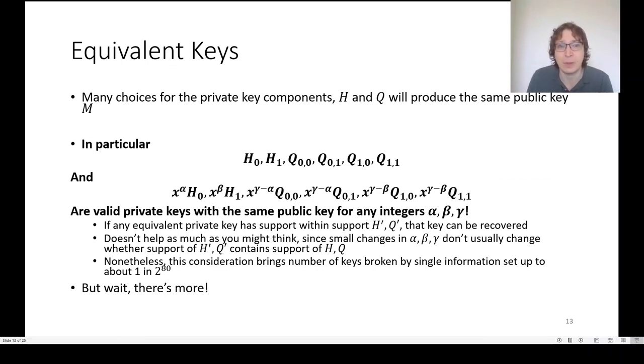In fact, there are a large number of possible private keys that will produce the same public key and recovering any of these private keys will be sufficient to attack the scheme. We can parametrize these with numbers alpha, beta, and gamma. Changing alpha, beta, and gamma by a little bit is usually going to just get you a key that you would have gotten anyway, or that you wouldn't have gotten if you didn't get it with this similar value of alpha, beta, gamma. But there's still enough freedom in there to increase the number of keys broken by a single information set up to about 1 to the 80. But there's more.